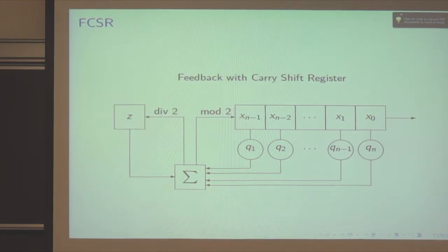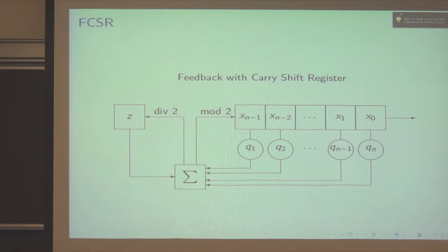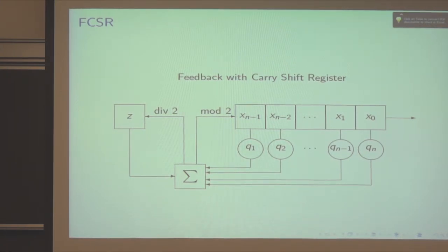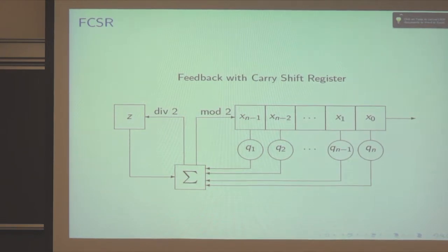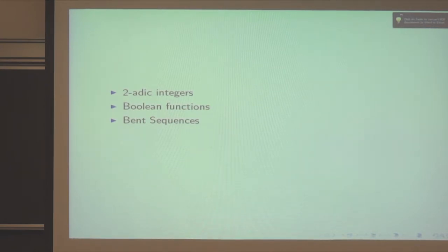What I studied were feedback with carry shift registers (FCSRs). Lots is already known about linear feedback shift registers — this is one of the first examples given by Golomb in his book in the 1960s. FCSRs are a newer design: instead of everything summing modulo 2 to the next bit, there is a memory element that stores what's left over from integer addition — we call this the carry. The carry stores the value left over from the previous addition into the next one. I'll discuss how to analyze the output of these FCSRs using 2-adic integers, Boolean functions, and results about bent sequences.